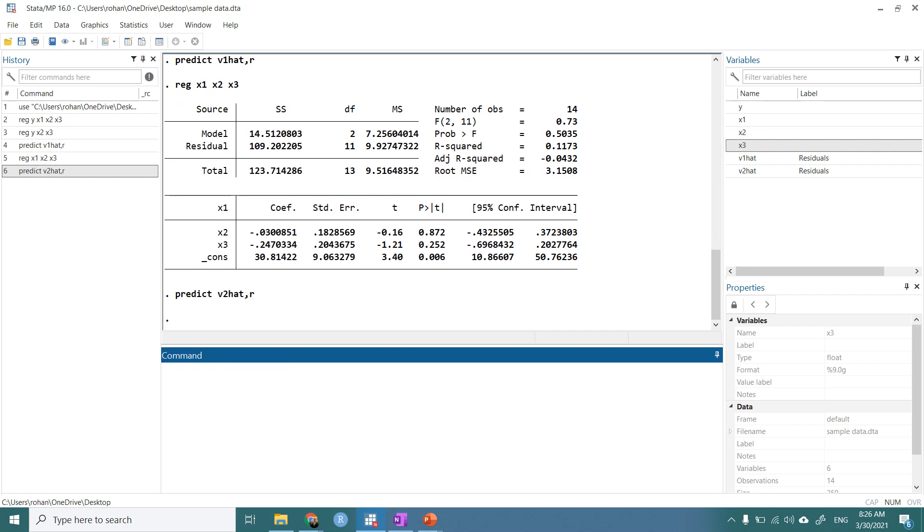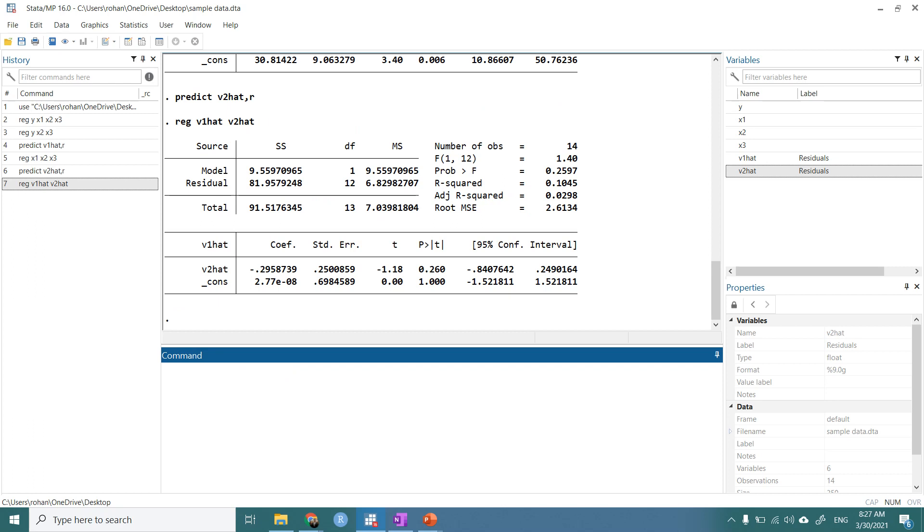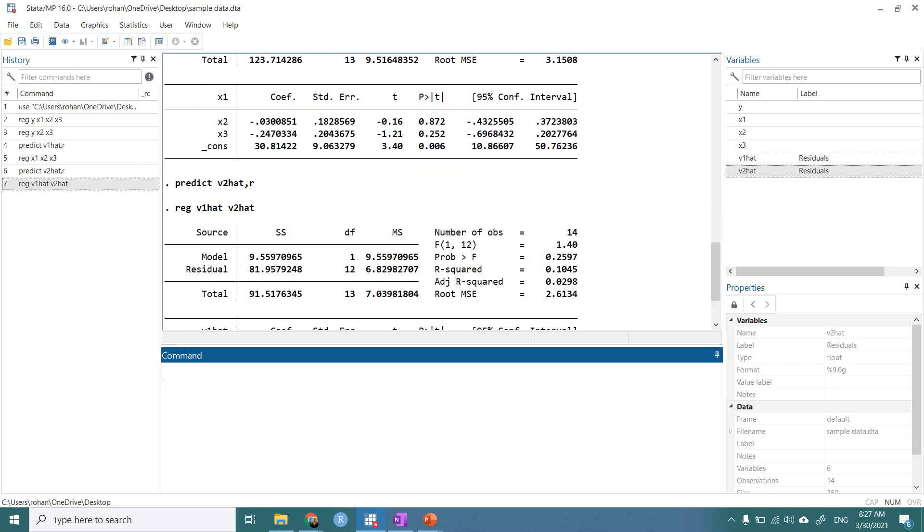So we have predicted both the error terms. And now our final step is to regress v1 on v2. So reg v1 on v2. So you can have a look over the coefficient of v2. The coefficient of v2 must be equal to the coefficient of beta1. It's minus 2.95873, 9.